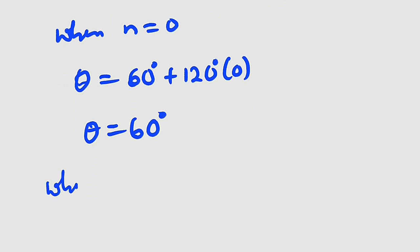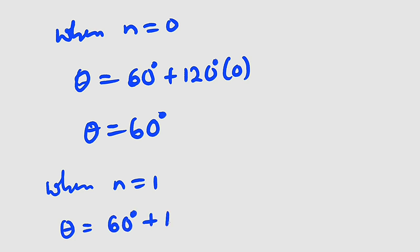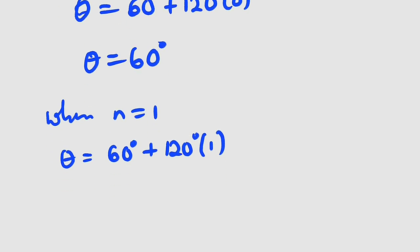When n equals 1: theta equals 60 degrees plus 120 times 1. 120 plus 60 is 180. So this is 180 degrees.